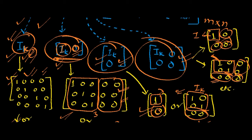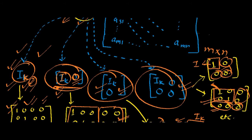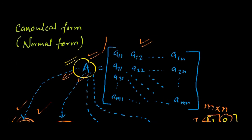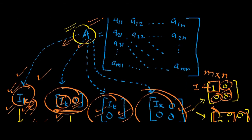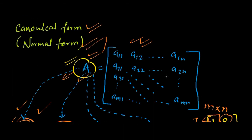So if we are getting any such representation after performing elementary row and column operations — a mix of these operations — then we can say that the converted form is the normal or canonical form of the matrix. The order K of the identity matrix in that representation will be the rank of matrix A.